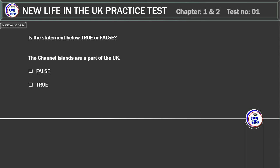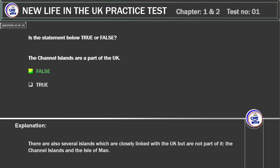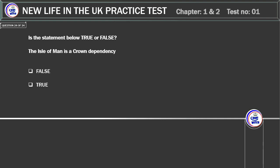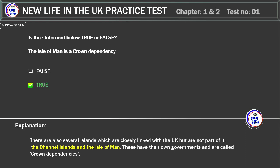Is the statement below true or false? The Channel Islands are a part of the UK. Correct answer: False. Explanation: there are several islands closely linked with the UK but not part of it — the Channel Islands and the Isle of Man. Is the statement true or false? The Channel Islands and the Isle of Man are crown dependencies. Correct answer: True. Explanation: the Channel Islands and the Isle of Man have their own governments and are called crown dependencies.